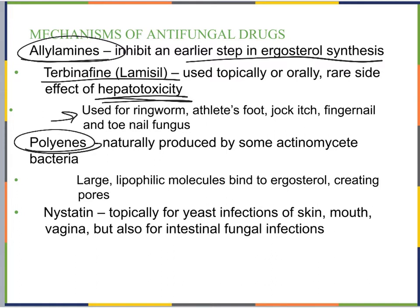We also have polyenes, naturally produced by some actinomycete bacteria. Rather than inhibiting ergosterol synthesis, polyenes are large lipophilic molecules that bind to ergosterol after it's synthesized. That ergosterol is incorporated into the fungal cell membrane, and the polyene creates large pores — killing the cell. An example is nystatin, used topically for yeast infections of the skin, mouth, and vagina, and also for intestinal fungal infections.